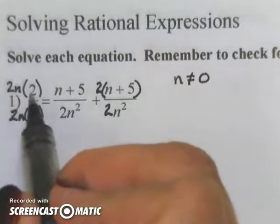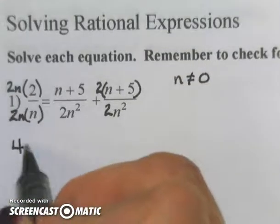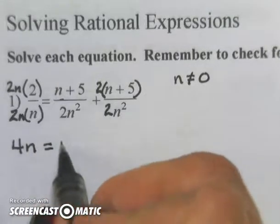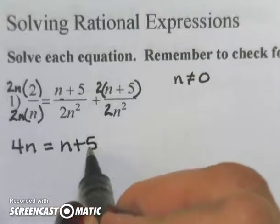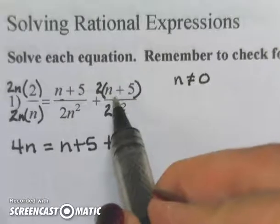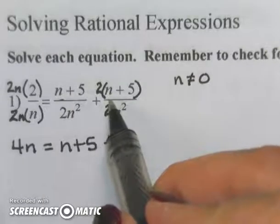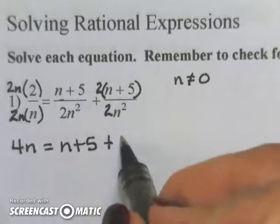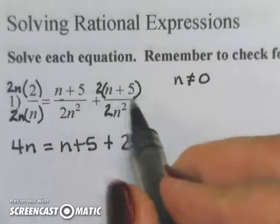2n times 2 is 4n. My equal sign, n plus 5, plus 2 times n and 2 times 5. I'm going to do my distributive property. 2 times n is 2n, 2 times 5 is 10.